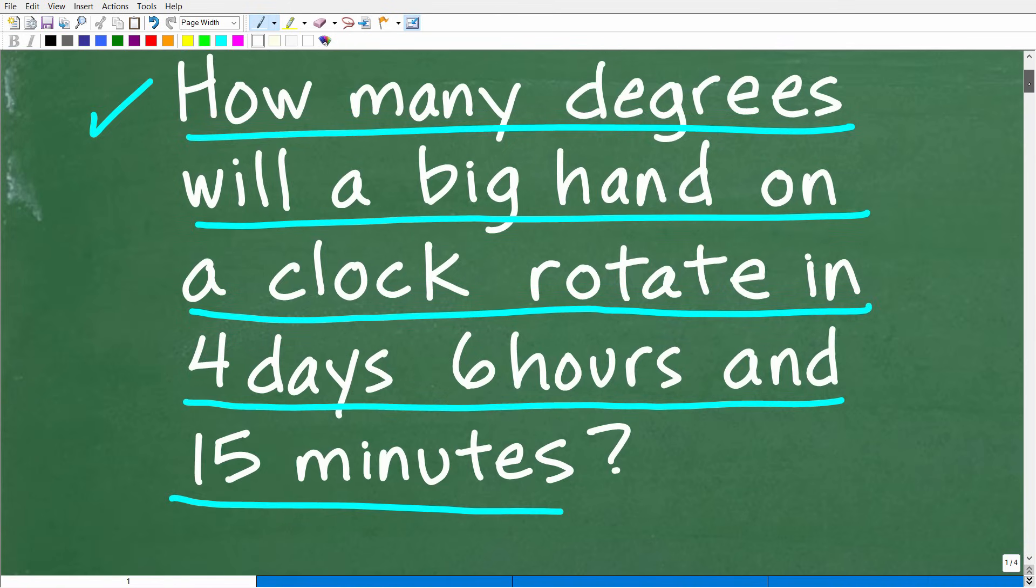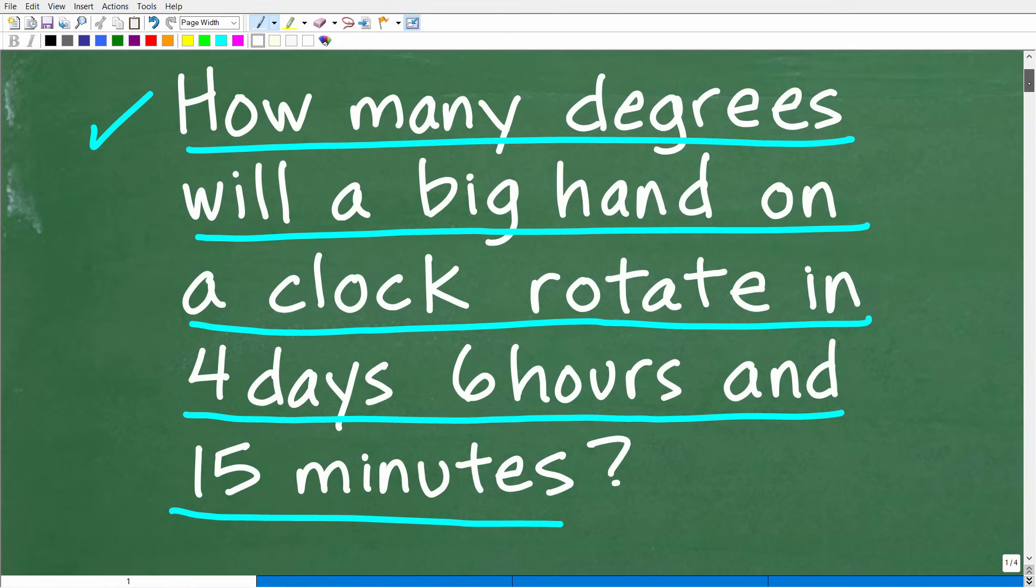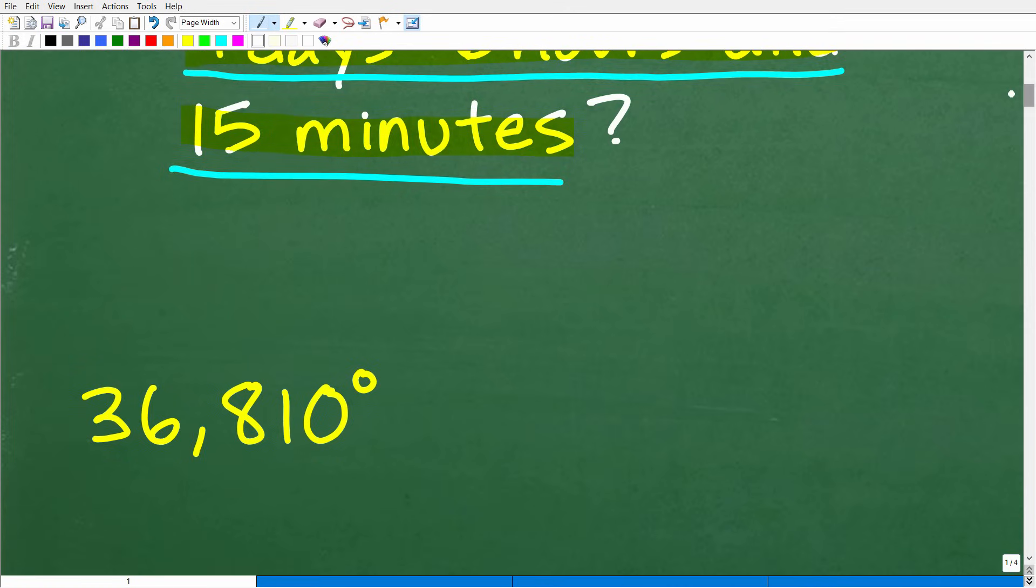Alright, so a lot of things kind of going on in this problem. So hopefully you know how to read a good old fashioned clock. I know most clocks these days are digital, but if you forgot, I will remind you. But again, we want to know how many degrees a big hand on a clock will rotate in four days, six hours, and 15 minutes. Let's go ahead and take a look at the answer.